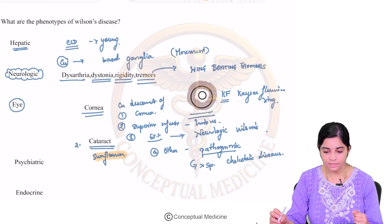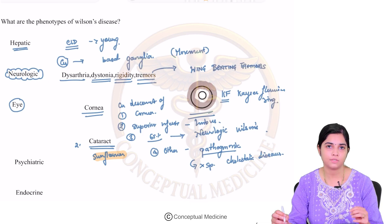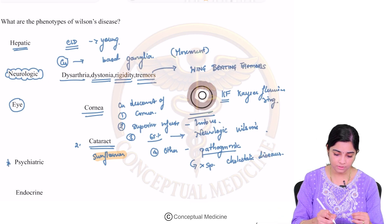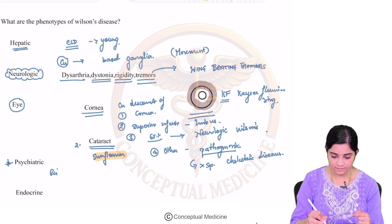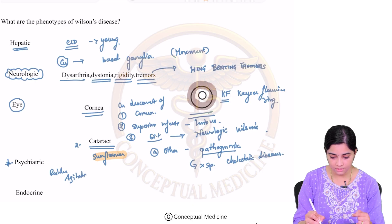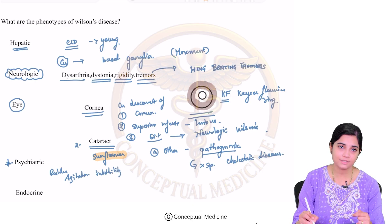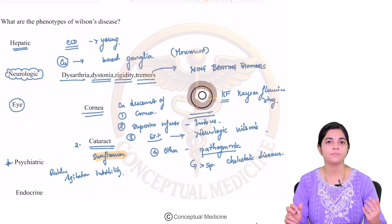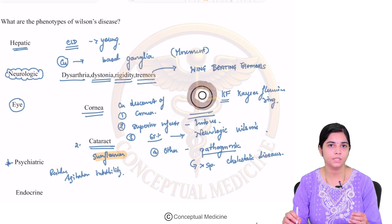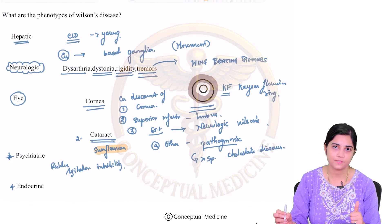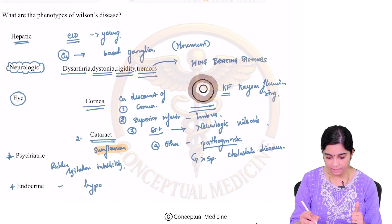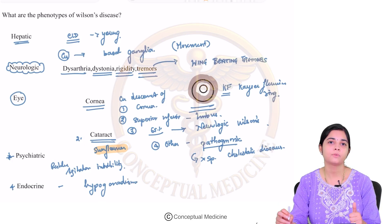What are the psychiatric manifestations? The third most important phenotype — very very important — is that there are certain neuropsychiatric manifestations. You can have restlessness, agitation, and irritability. In severe cases, they become very quiet and apathetic, but these changes can present in the initial stages. Next, endocrine manifestations: Wilson's disease is associated with hypogonadism.